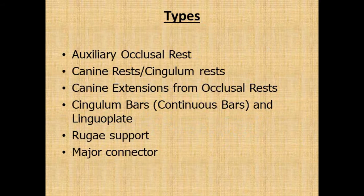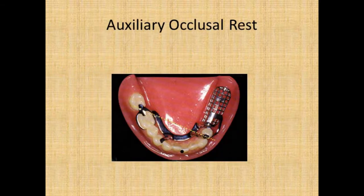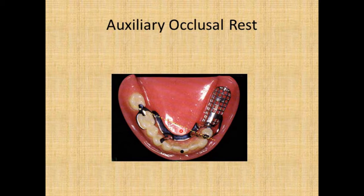Now let us see the types of indirect retainer: auxiliary occlusal rest, canine or cingulum rest, canine extensions from occlusal rest, cingulum bar and linguoplates, rugae support, and major connector. The first — auxiliary occlusal rest — is the most frequently used and is usually located on the mesial marginal ridge of the first premolar. It is placed on the perpendicular line drawn from the midpoint of the fulcrum line. It is indicated when there is inadequate cingulum tooth structure on the canines, and incisors are avoided due to their weakness and steep inclines.